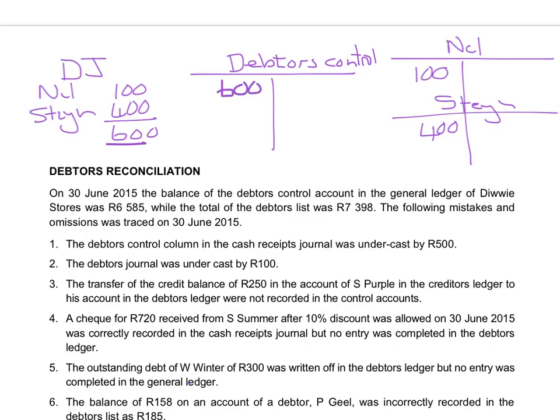We will do the same entries for the debtors allowances journal, cash receipts journal, and cash payments journal. The individual entries on the date the transaction took place will be transferred to the individual account of the debtor in the debtors ledger. At the end of the month, the totals of the debtors control column in the various journals will be posted to the debtors control account. The debtors control account is therefore a summary of all the entries in your debtors ledger.